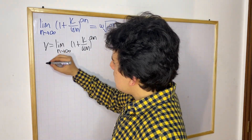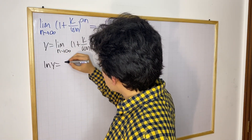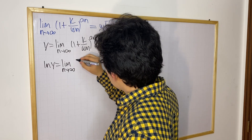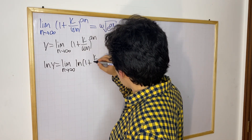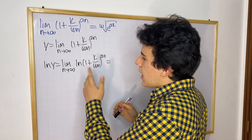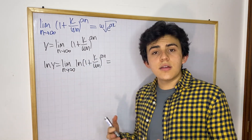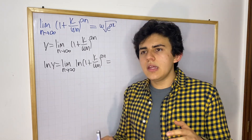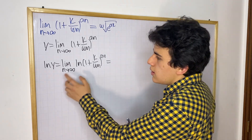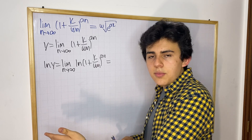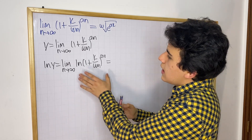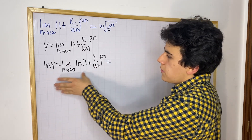What I'm going to do is take the natural log on both sides of this equation. We're going to have that ln(y) equals the limit as n approaches infinity of the natural log of (1 plus k over wn) to the an. You might be wondering — can I write ln inside the limit? Yes, there is a property that allows you to say that the limit of the log equals the log of the limit. That property allows us to do this, so this is valid.